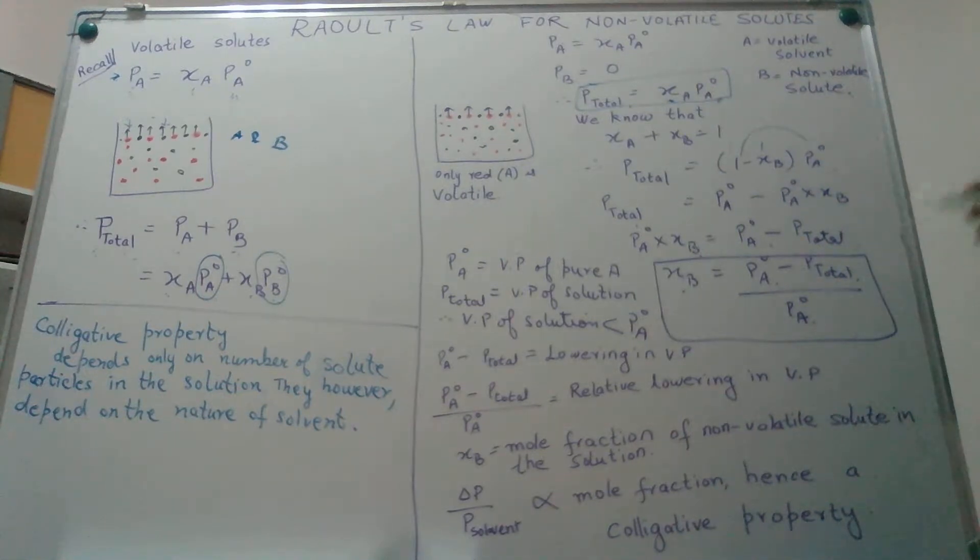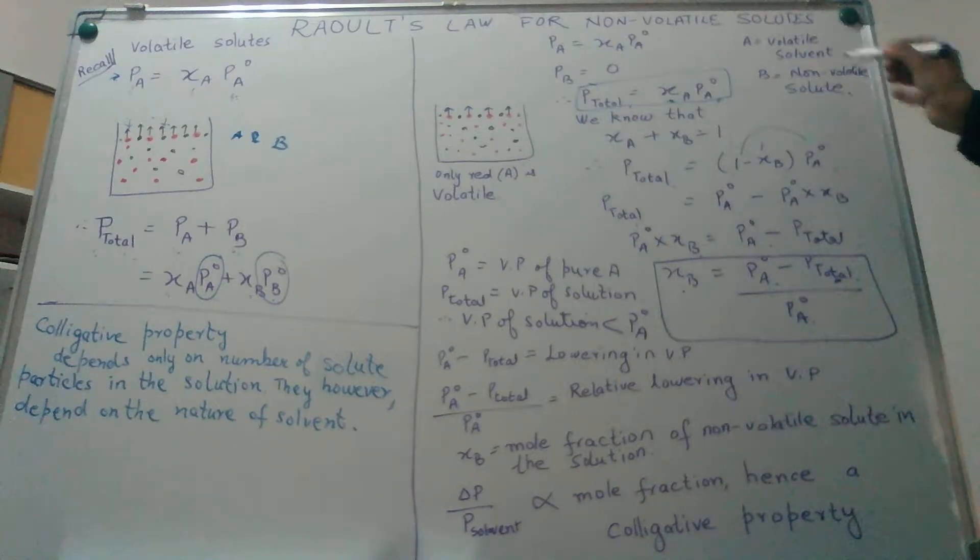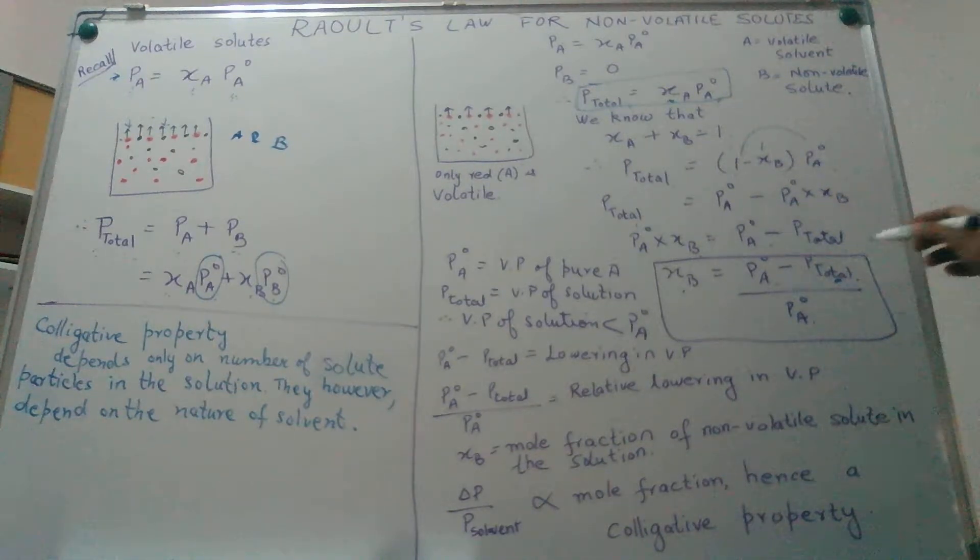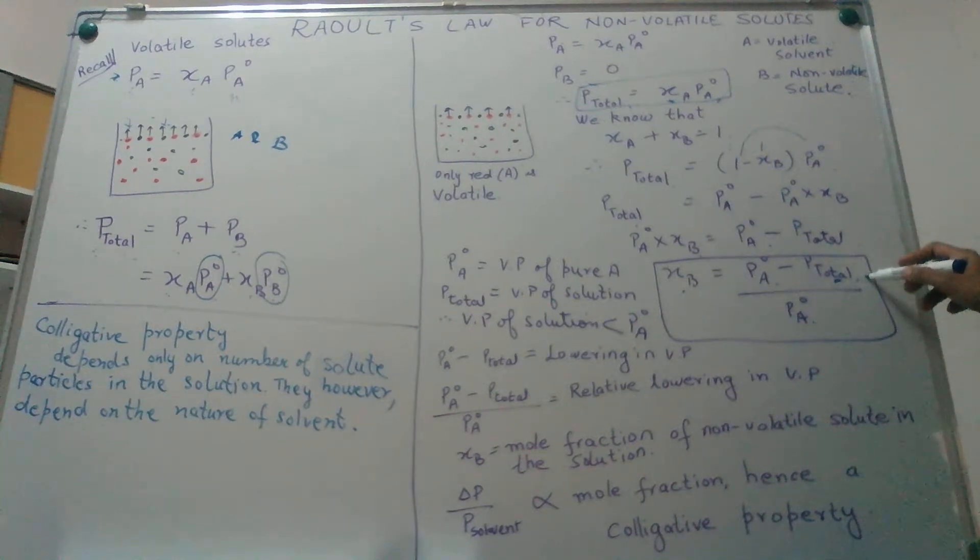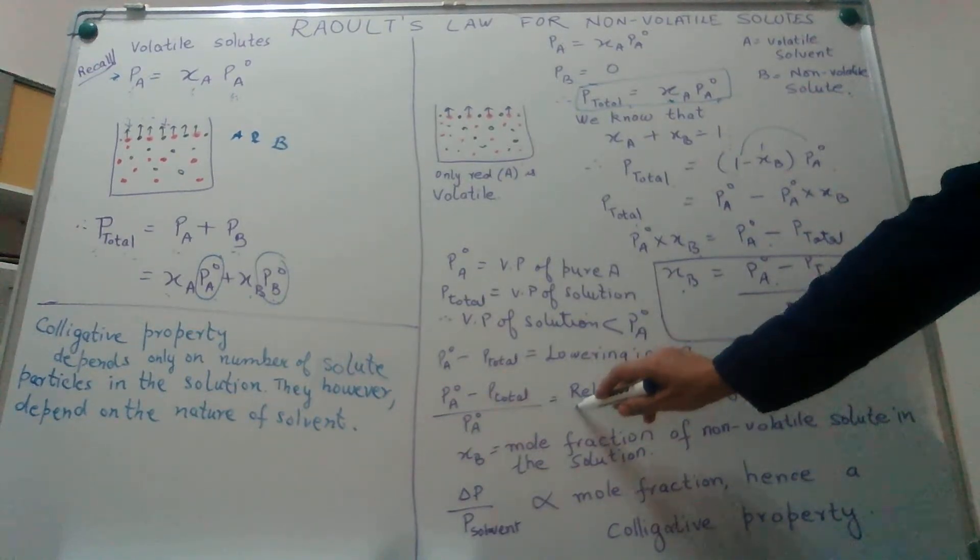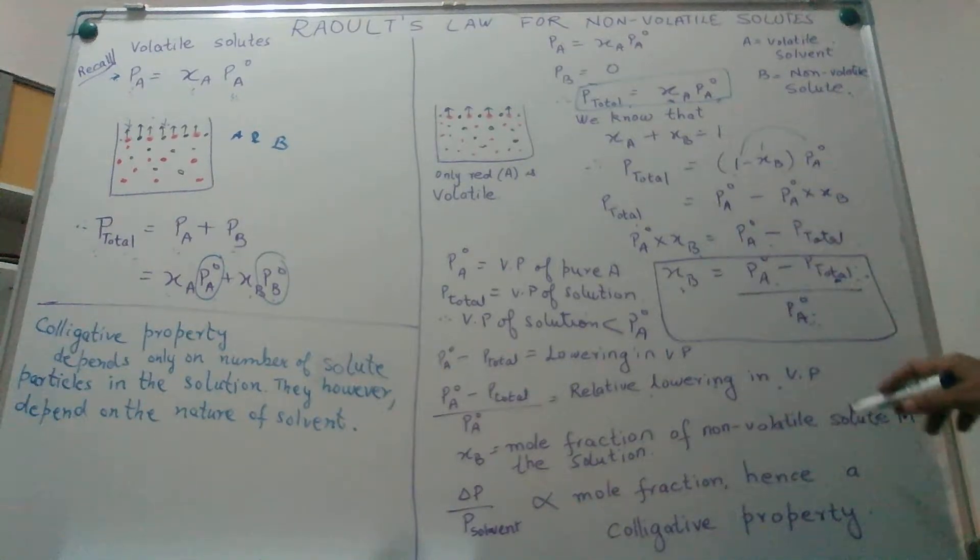First of all, this equation tells you that the total vapor pressure in this kind of a binary mixture where we have a non-volatile solute is lower than the vapor pressure of the solvent in the pure state. So this is my lowering of vapor pressure. When I divide it by the vapor pressure of pure A, that means this is the lowering of vapor pressure with respect to the vapor pressure of pure A. So that is we term it as relative lowering of vapor pressure. XB is my mole fraction of the non-volatile solute.